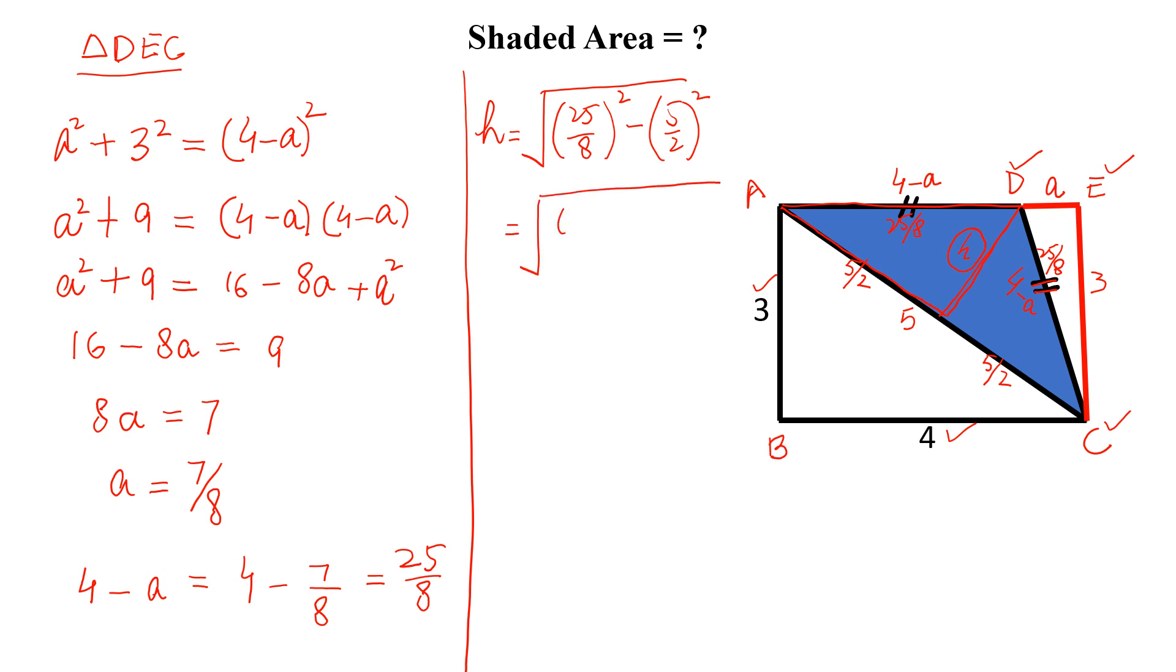If we simplify this, this will be equal to 625 divided by 64 minus 25 by 4. And if we simplify more, this will be equal to 225 divided by 64 and this will be equal to 15 by 8. So this is the height of this triangle.